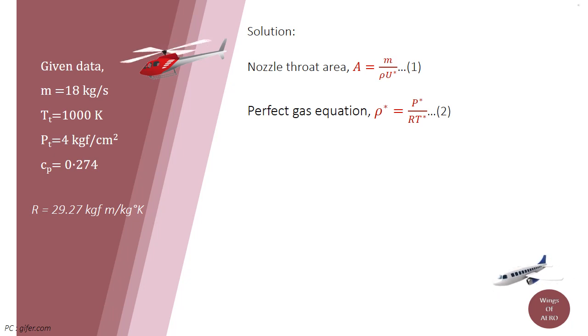Where P star is the critical pressure, R is the gas constant which is 29.27 kg force meter per kg kelvin, and T star is the critical temperature.